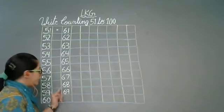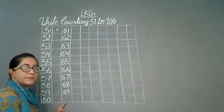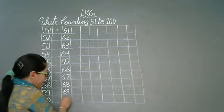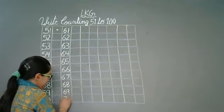Yehaan pei kya aega? 6 ki line end ho rhi hai na? Aur six ke baad me kya aata hai? 7. So yehaan pei kya aega? 7, 0, 70.